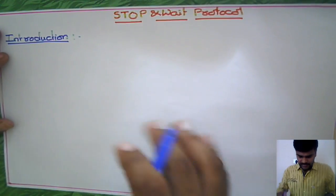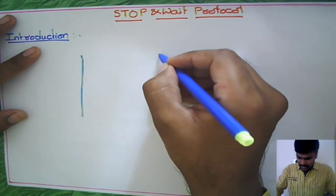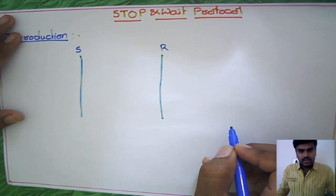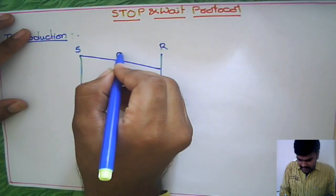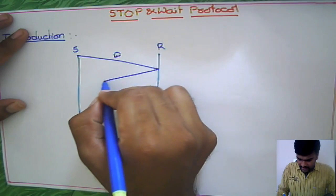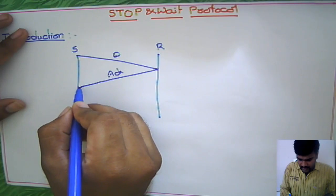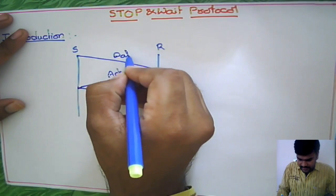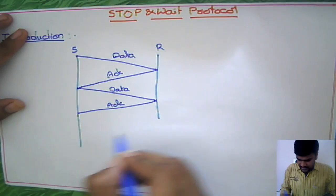Let us take source and destination as an example. This is the sender and this is the receiver. The sender sends some data, and the receiver gives acknowledgement for that packet. Then after getting acknowledgement, the sender sends the next packet, and the receiver gives acknowledgement for that packet. This is the regular process.